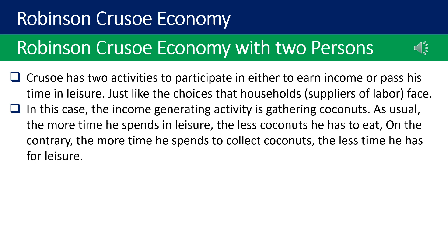Crusoe has two activities: either to earn income or pass his time in leisure, just like the choices that households — suppliers of labor — face. In this case, the income-generating activity is gathering coconuts. The more time he spends in leisure, the less coconuts he has to eat; on the contrary, the more time he spends collecting coconuts, the less time he has for leisure.